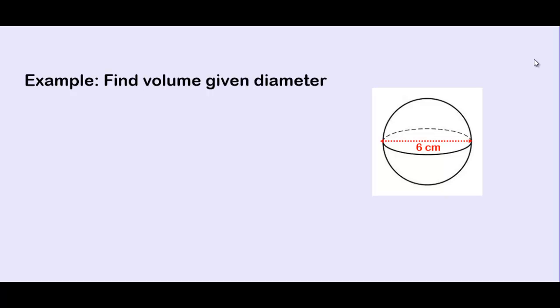Find the volume of this sphere given its diameter. Our formula for the volume of a sphere is equal to 4 times πr³ all divided by 3, or 4/3 πr³.